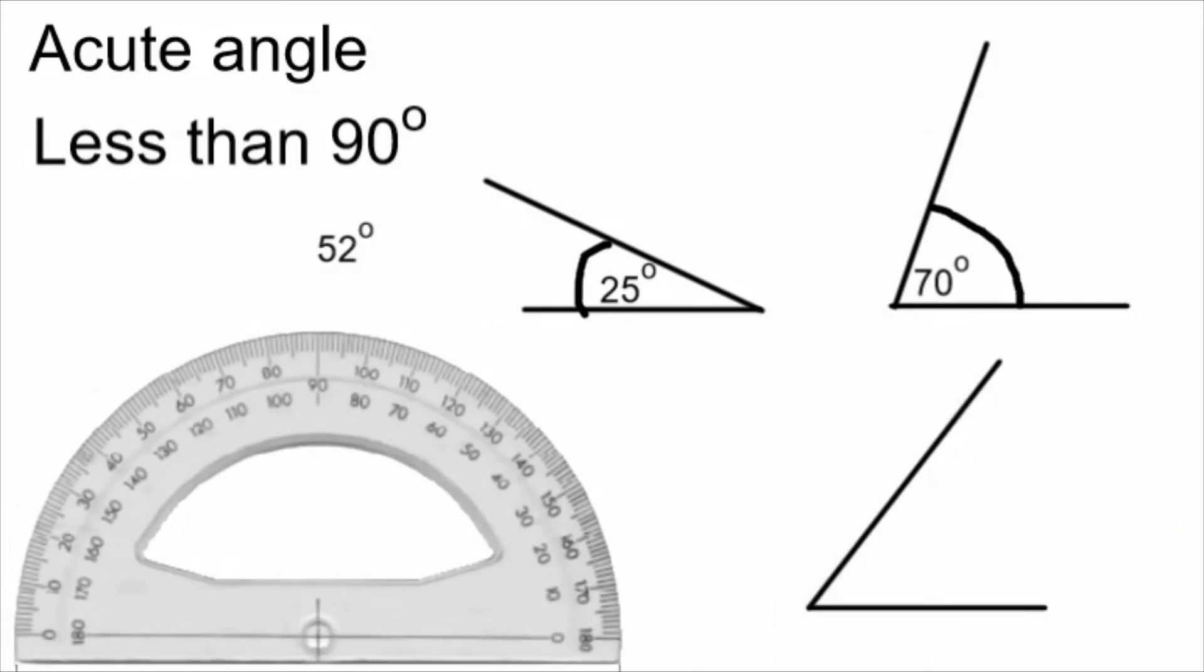Move the protractor out of the way, and I label my angle. 52 degrees with an arc. This is how we draw an acute angle. Any angle that is between zero and 90 degrees. That's today's daily dose of math.